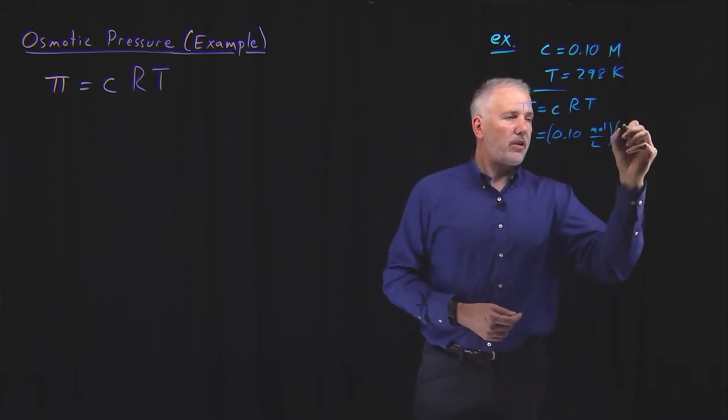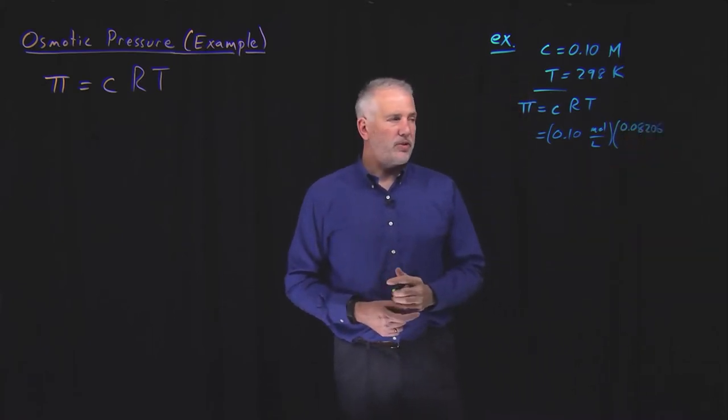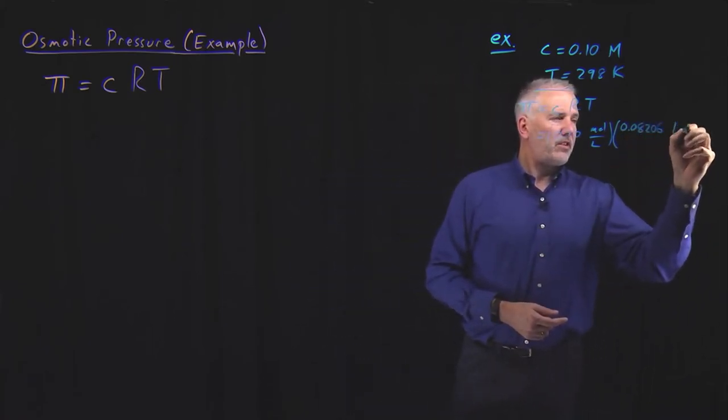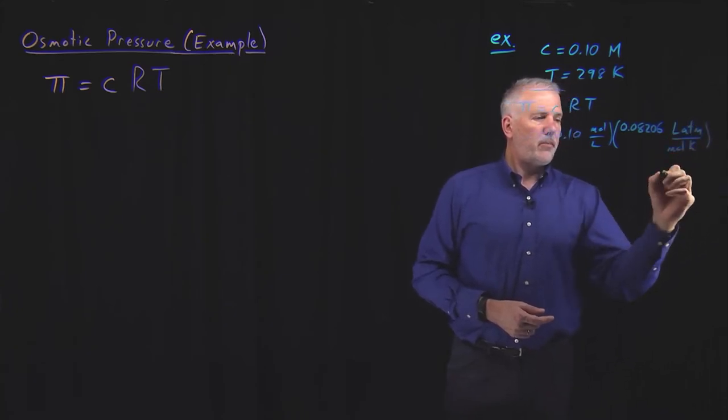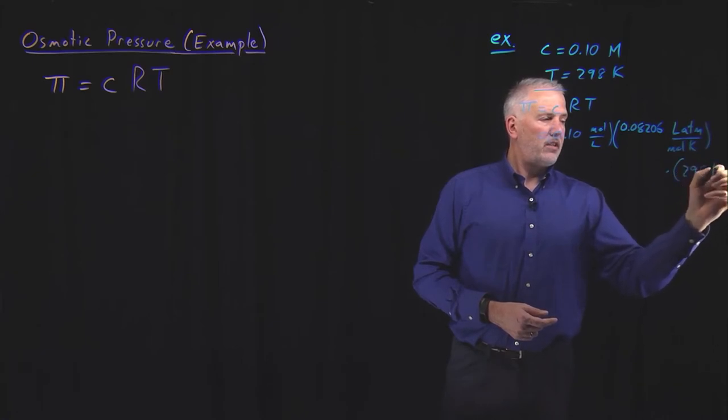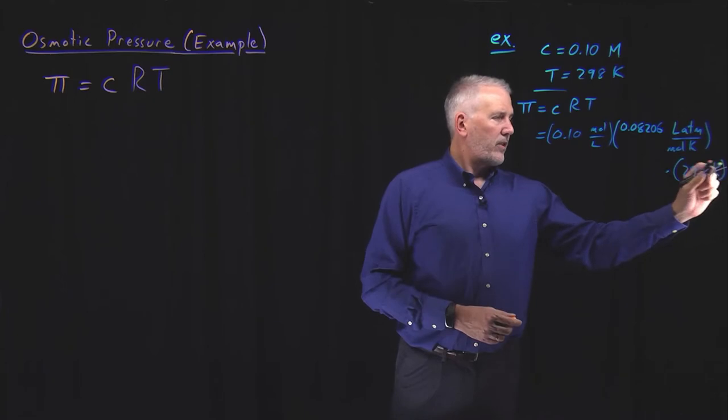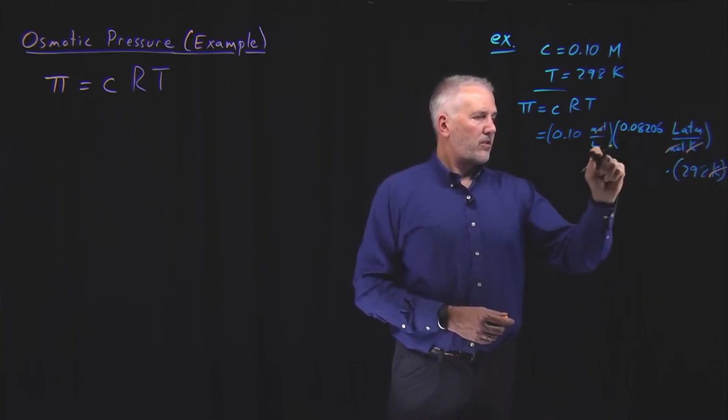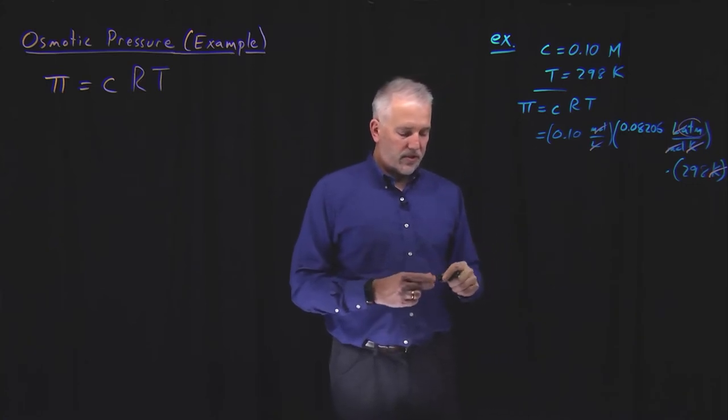So it's going to be more convenient if we use a value like 0.08206 liter atmospheres per mole Kelvin. And if I multiply that by the temperature, 298 Kelvin, now Kelvin will cancel, moles will cancel, liters will cancel, and I'm left with just units of atmospheres.